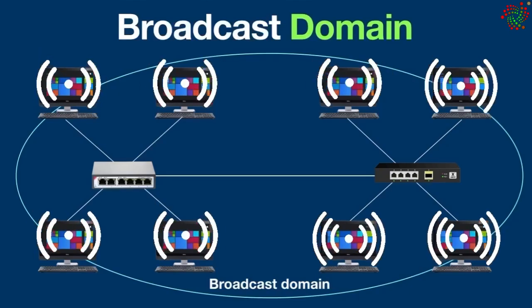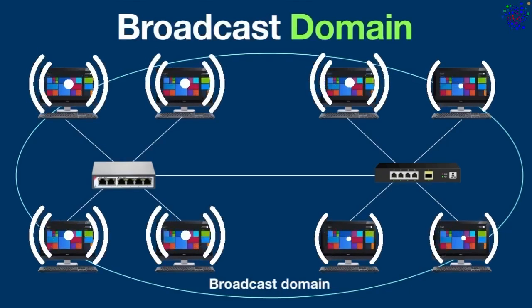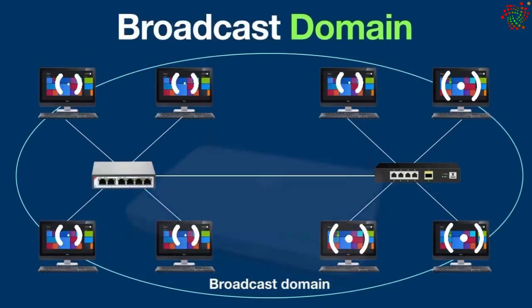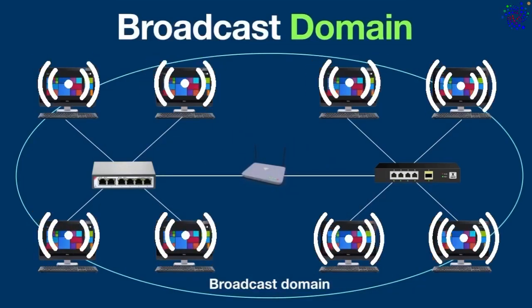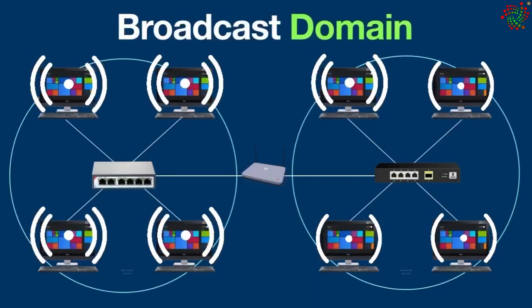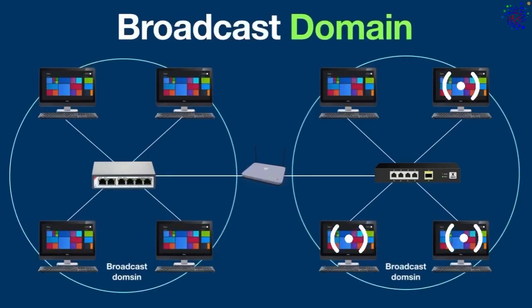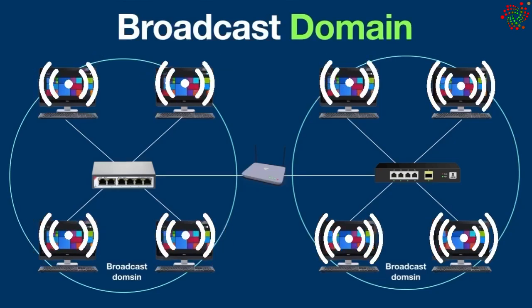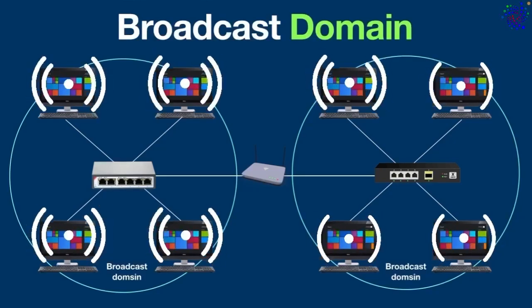However, as a network administrator, if you want to divide this broadcast domain into two separate broadcast domains, this can be done by placing a router in between the hub and switch. This will divide the broadcast domain into two separate broadcast domains because broadcast cannot pass through the router. So remember: hubs and switches forward broadcast, but routers block the broadcast.